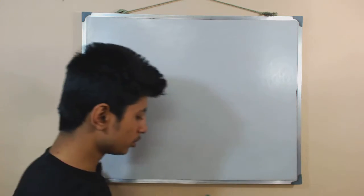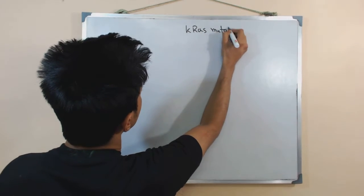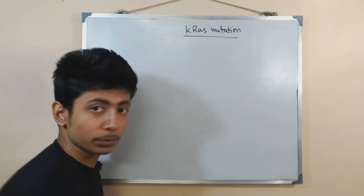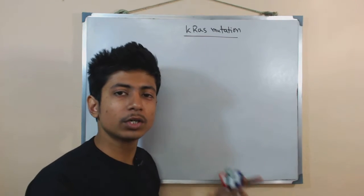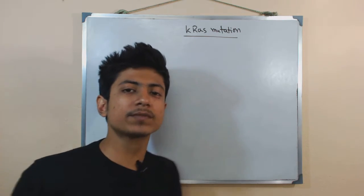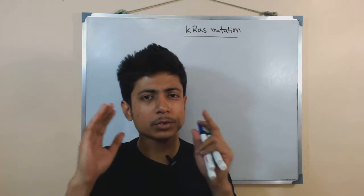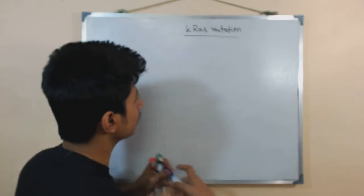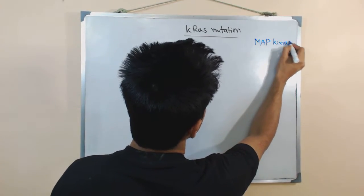Welcome again guys, we are talking about different types of genetic mutation in the human body. In this video we are going to talk about KRAS mutation. To understand KRAS mutation, it is extremely important that you know the cellular growth signaling pathway, because there are different types of signaling pathways in our body, including growth signaling pathways. The basic pathway is called the MAP kinase pathway.